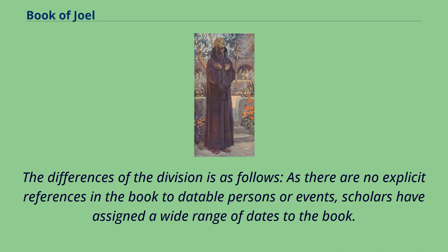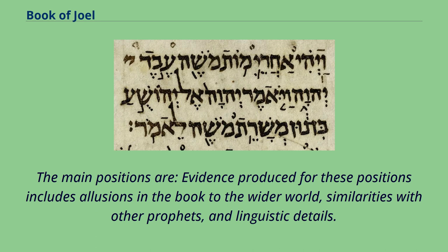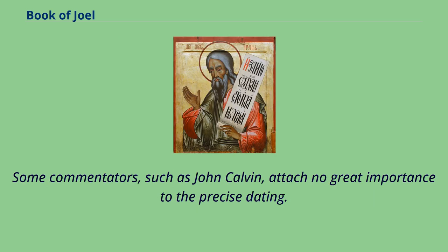As there are no explicit references in the book to datable persons or events, scholars have assigned a wide range of dates to the book. Evidence produced for these positions includes allusions in the book to the wider world, similarities with other prophets, and linguistic details. Some commentators, such as John Calvin, attach no great importance to the precise dating.